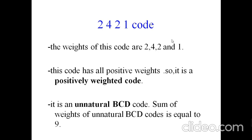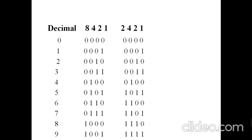Now let's look at a table comparing decimal digits, their 8421 representation, and their 2421 representation. Decimal zero converts to 0000 in 8421, and likewise 0000 in 2421. Decimal one is 0001 in 8421 and 0001 in 2421. Decimal two is 0010 in 8421 and 0010 in 2421. Decimal three is 0011 in 8421 and 0011 in 2421.